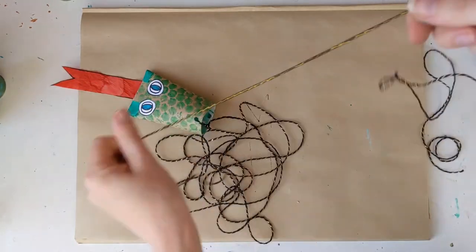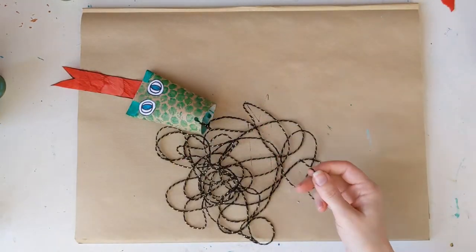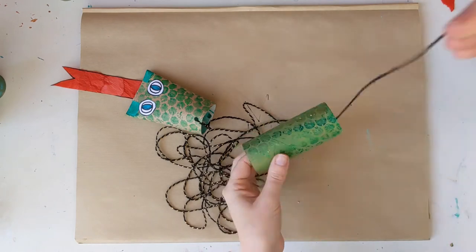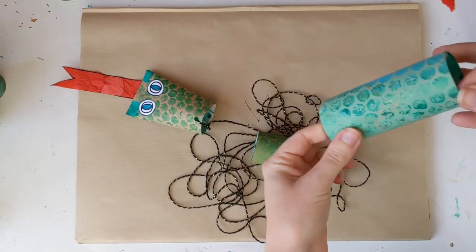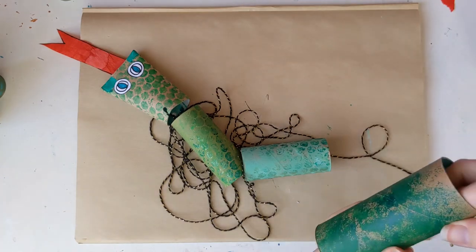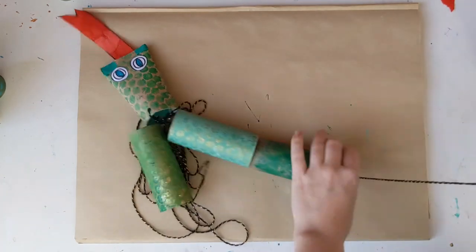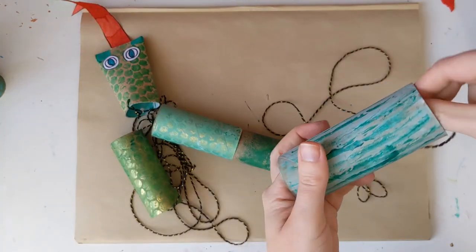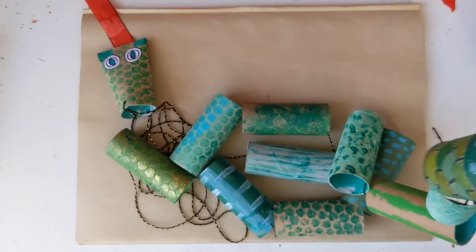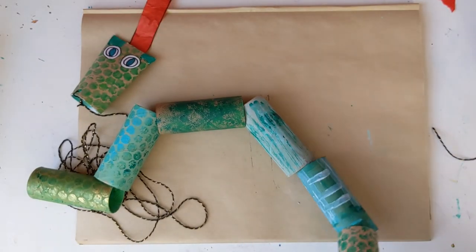Now the string is attached to the head we can start threading the other sections of the snake onto the string. And you can do this in whatever order you like. Get all your toilet rolls that you've painted and decorated with scales and thread them onto your string. Like this. Oh he's looking quite long.